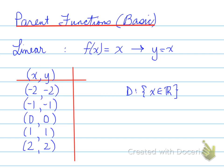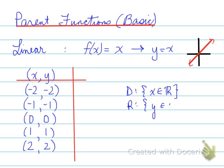Let's do a quick sketch. Without any coordinates, you will see that it looks something like this, where there is an arrow on either end — that is the y equals x line. The y equals x line has a domain of x belongs to real, and a range of y belongs to real. And that is true for all lines that are not horizontal or vertical.